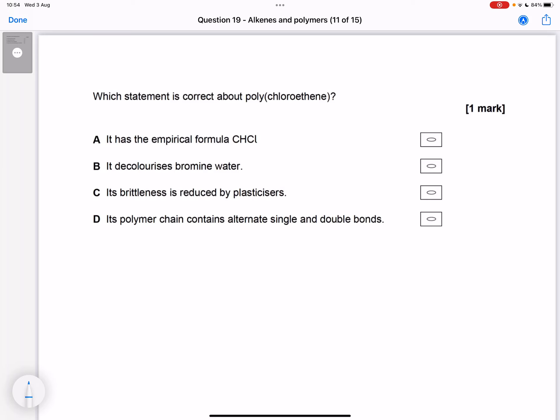Which statement is correct about polychloroethene? So chloroethene - ethene is two carbons, chloroethene would have one H.